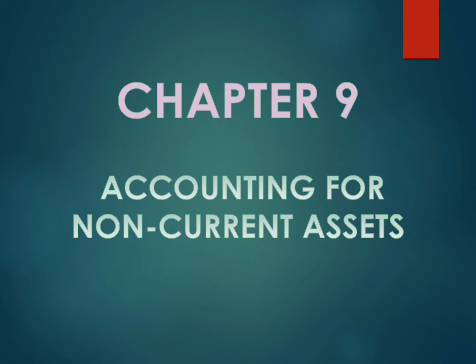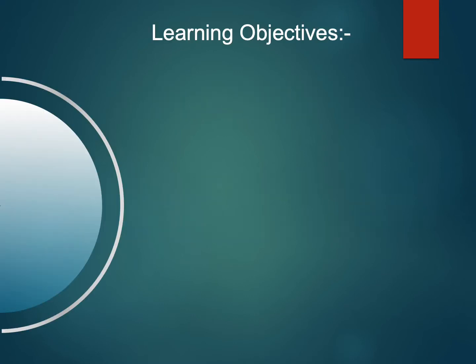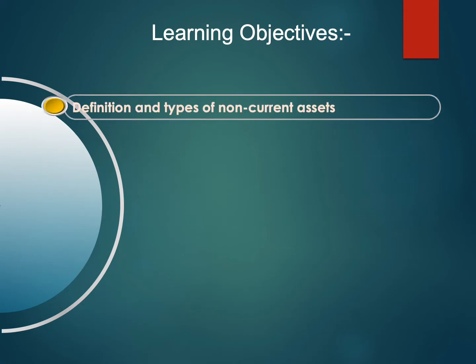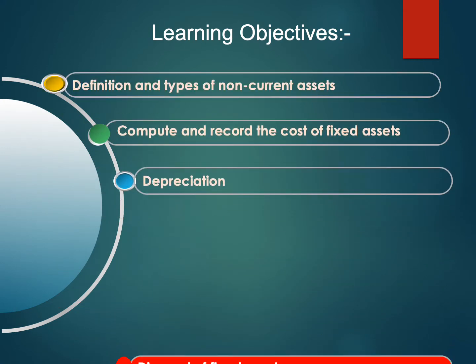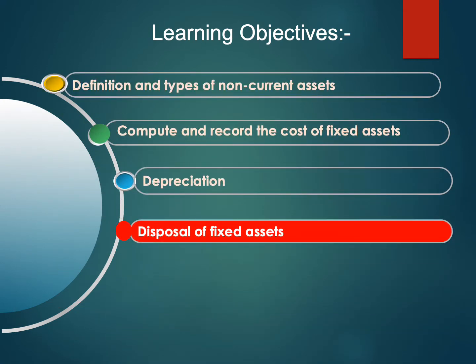Chapter 9, Accounting for Non-Current Assets. Our learning objective will be focused on Disposal of Fixed Asset.